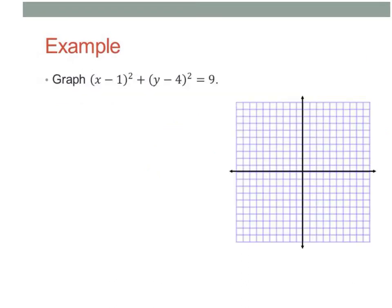Next we want to graph the quantity x minus 1 squared plus the quantity y minus 4 squared equals 9. This is a circle. So where is my circle centered? It's centered at 1, 4. So I'm going to start at 1, 4. There's my center.